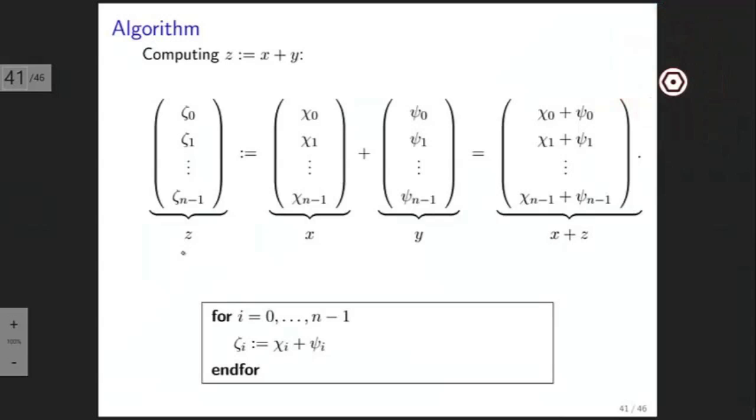We can write this as an algorithm where each component zeta sub i is computed as zeta sub i becomes chi sub i plus psi sub i, the ith component of x plus the ith component of y. And then all you need to do is write a for loop that executes that for i from 0 to n minus 1.